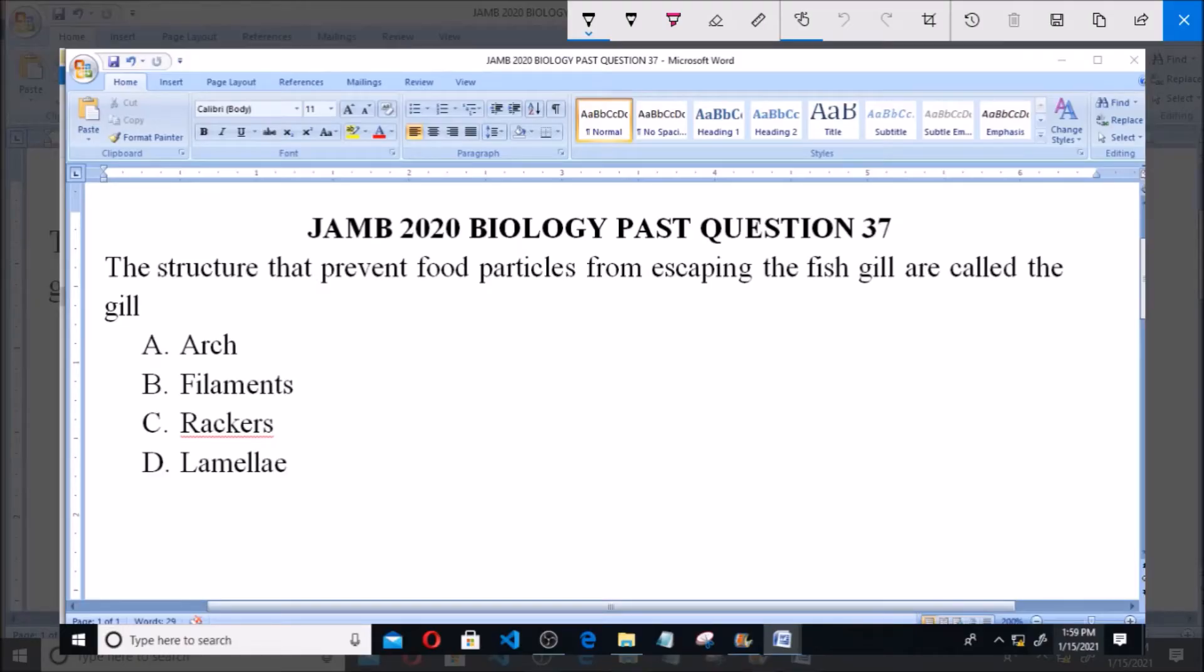Hello, good day and welcome. I'll be answering JAMB 2020 Biology past question 37. The structure that prevents food particles from escaping the fish gill are called the gill: A. Arch, B. Filaments